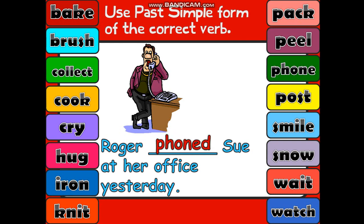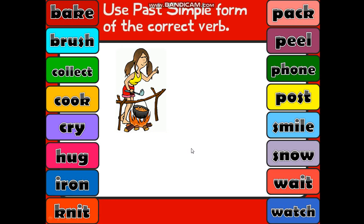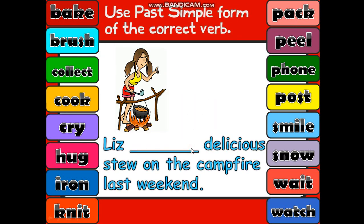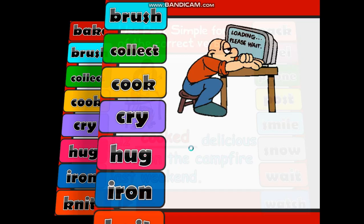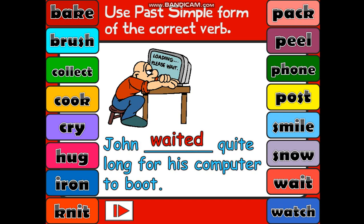What did Roger do? He phoned Sue. Remember, whenever we have 'e' at the end of the verb, we don't add another 'ed' — we only add 'd'. Liz cooked a very delicious meal on the campfire. John waited in front of the computer — we added 'ed' at the end of the verb.